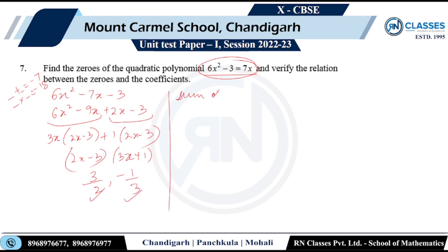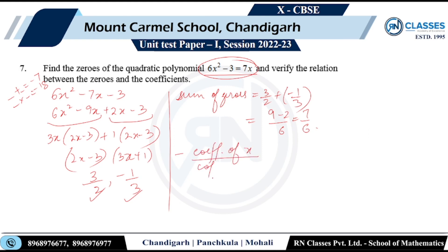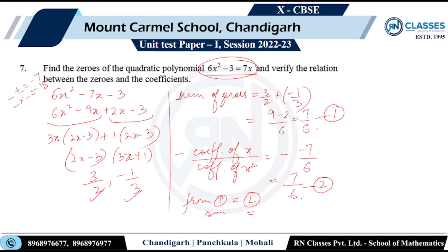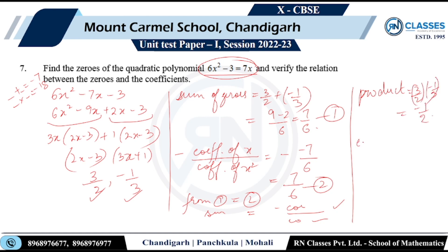Verification: sum of zeros is 3/2 plus (-1/3) equals 7/6. Then negative coefficient of x divided by coefficient of x squared equals -(-7)/6 equals 7/6. These match, so the relationship is verified. Product of zeros: 3/2 times (-1/3) equals -1/2. Constant term divided by coefficient of x squared equals -3/6 equals -1/2. Product relationship also verified.